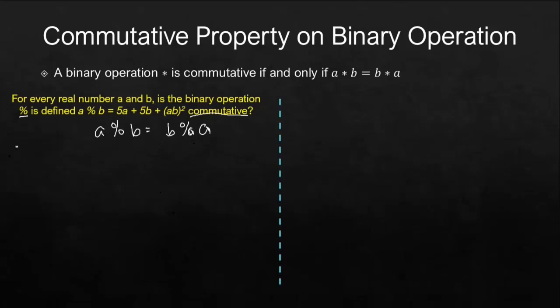What I'm showing is like this: a percent b. The first term or the first number should be multiplied by 5, so this is 5 times a. The second number b should be multiplied by 5 as well, so 5b. And then for the last term, you multiply the two numbers and then square their product, so we have a, b squared.